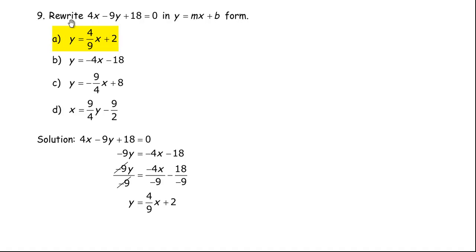Question number 9. Rewrite 4x - 9y + 18 = 0 in y = mx + b form. We want to rearrange this and isolate for y, or get the y alone.